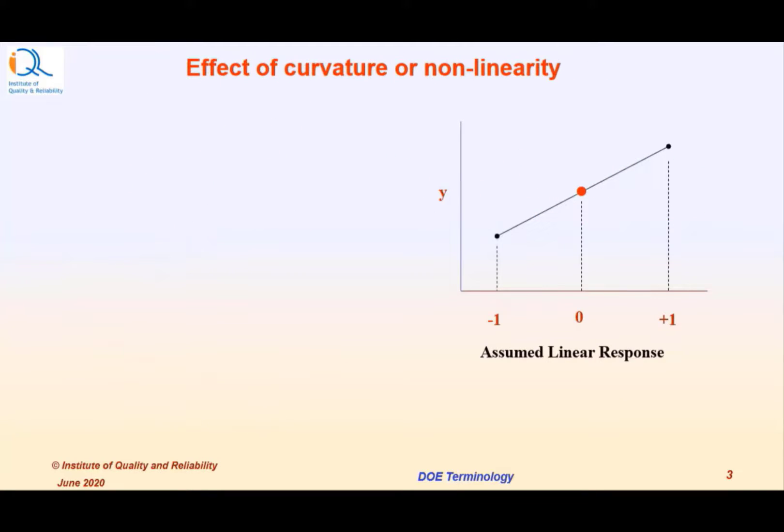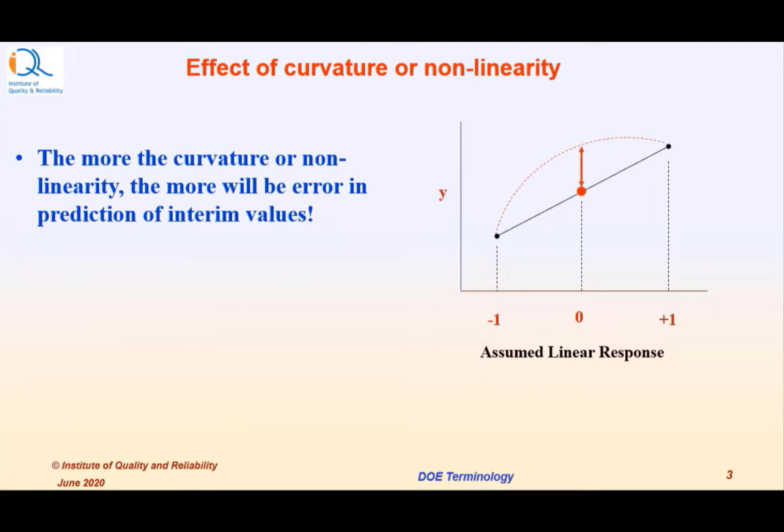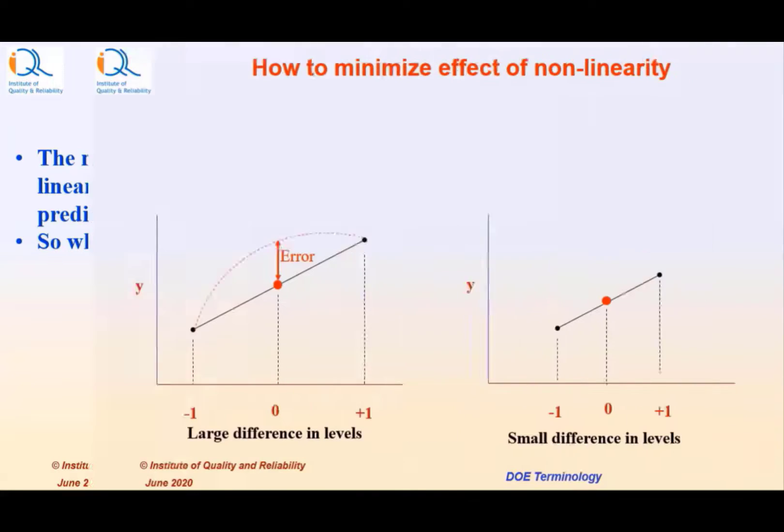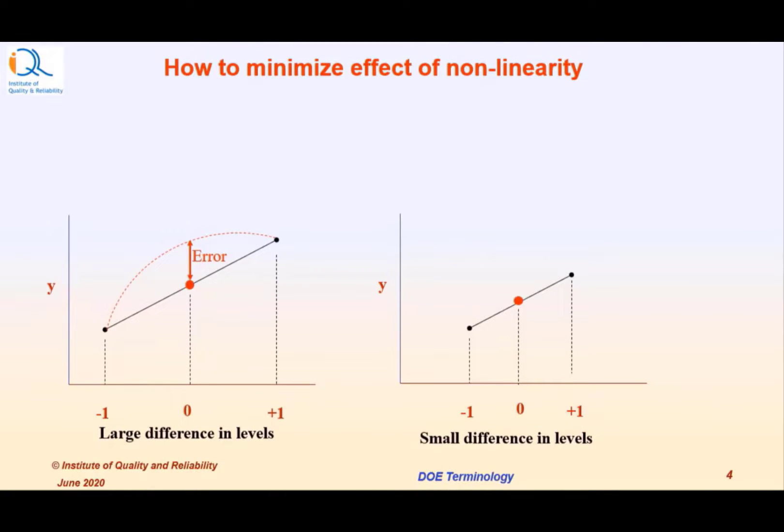So what is the effect of curvature or non-linearity? The more the curvature or non-linearity, the more will be the error in prediction of interim values. So what should we do? How to minimize the effect of this non-linearity in our experimentation?